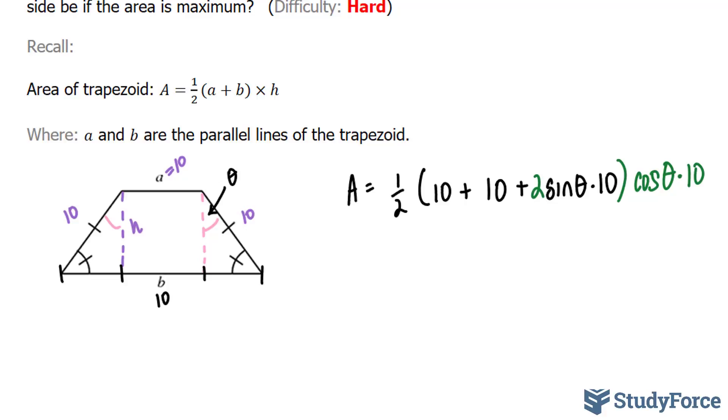What we'll do next is simplify this equation a little bit. Notice that you have a half here and a 10. So that will go away, and this will become a 5. And by the way, the 10 and the 10 become a 20. And we're left with 5 cosine theta bracket 20 plus 20 sine theta. This 2 and this 10 multiply to become 20. So we finally have an equation that represents the area of this trapezoid. And it's shown right here.